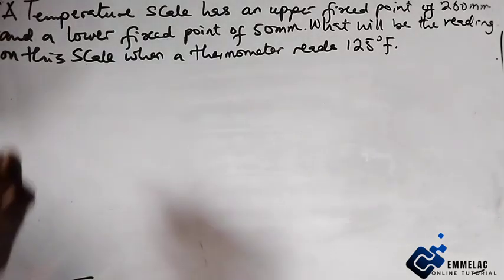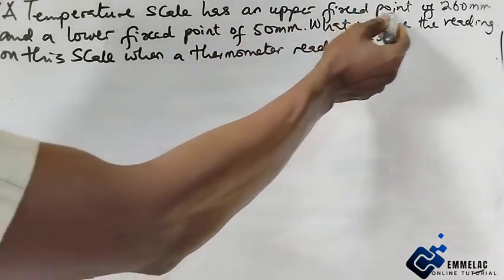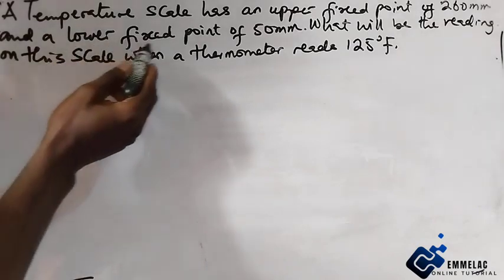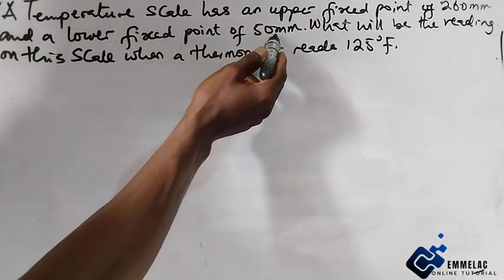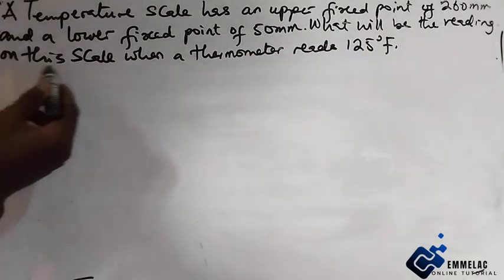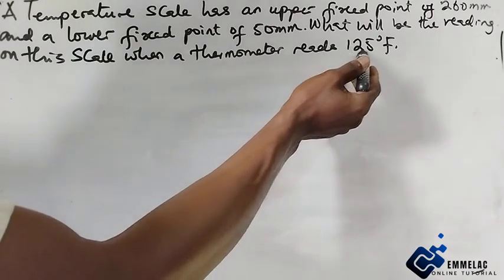The question goes this way: A temperature scale has an upper fixed point of 260 millimeter and a lower fixed point of 50 millimeter. What will be the reading on this scale when a thermometer reads 125 degree Fahrenheit?